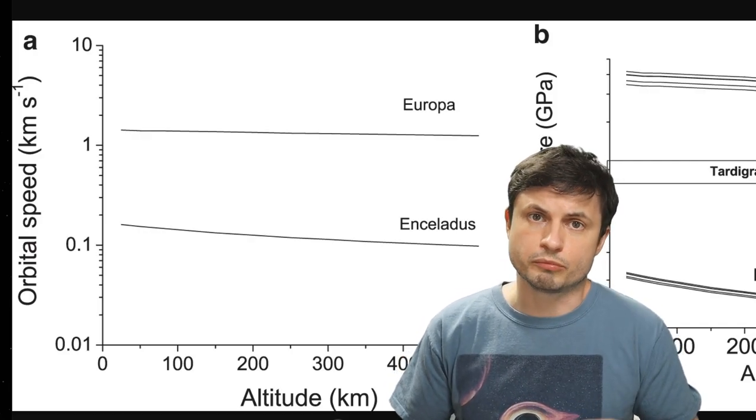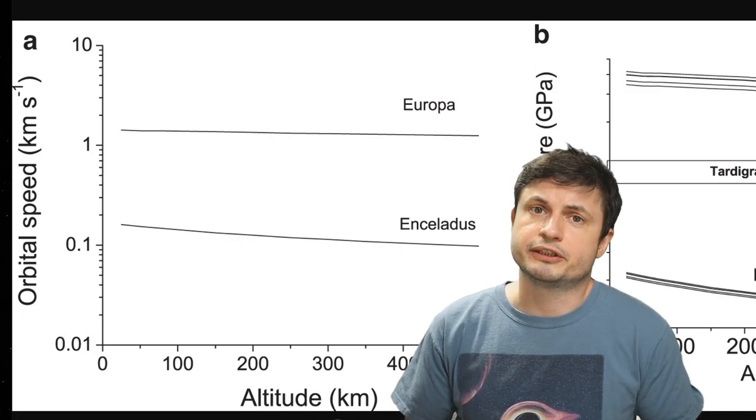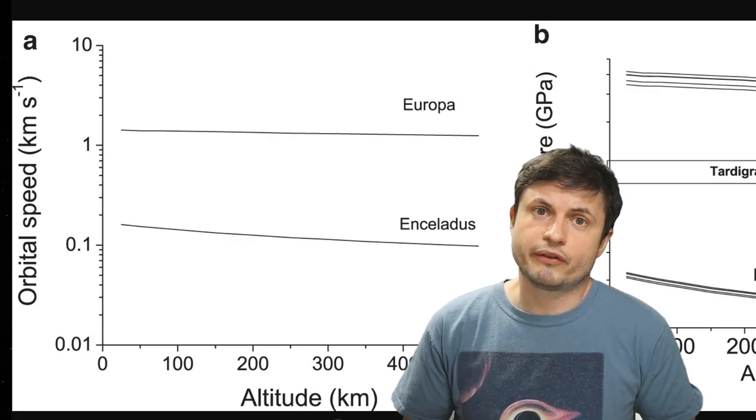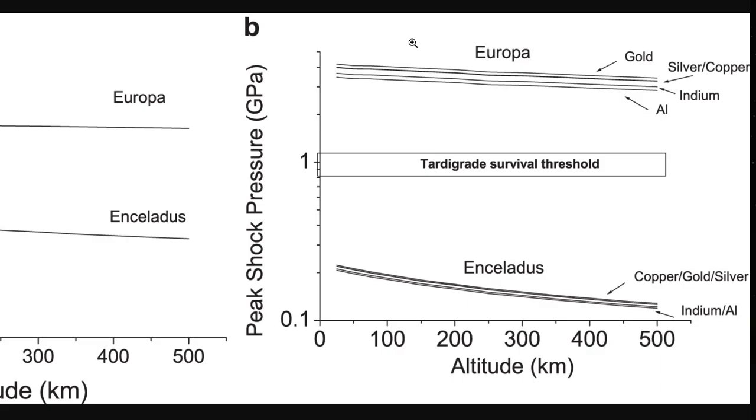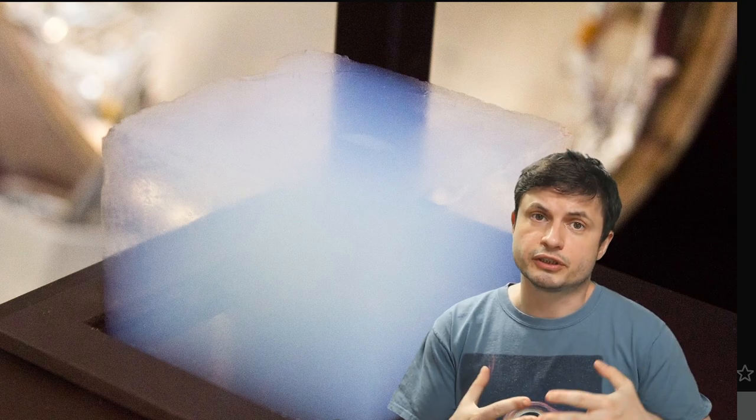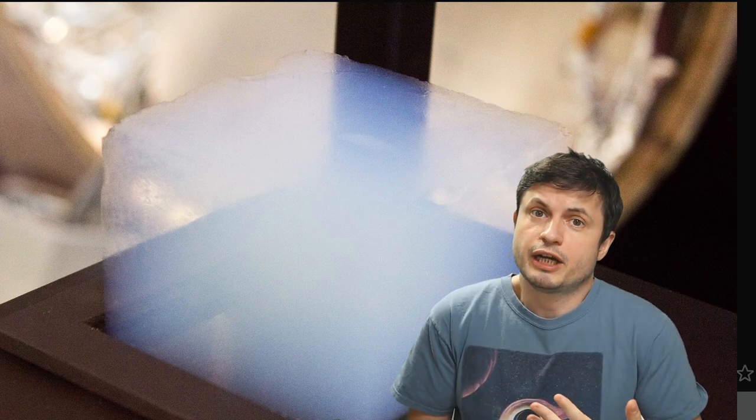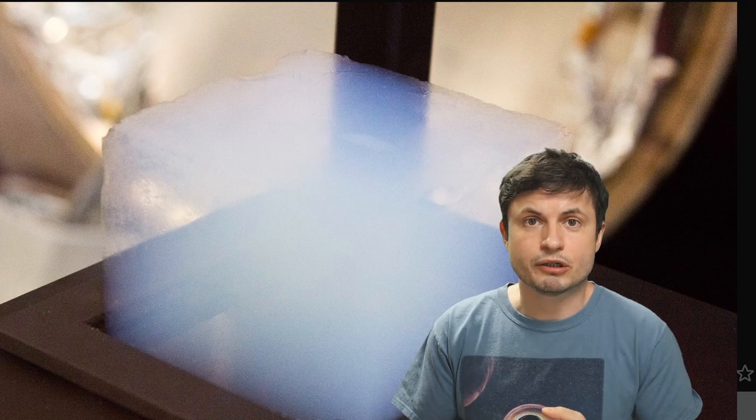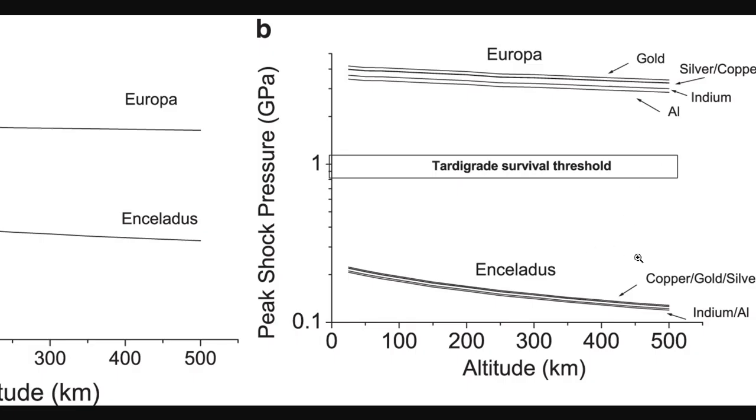And so here they decided to crunch some numbers for both of these objects - for Europa, which is the moon of Jupiter, and Enceladus, the moon of Saturn. And for both of them they found a possible solution. In case of Europa, even though the speeds might be still too high, by using a certain type of aerogel that can actually soften the blow and that's already been used in space for various missions, they could hypothetically lower the pressures and allow potential creatures to survive.